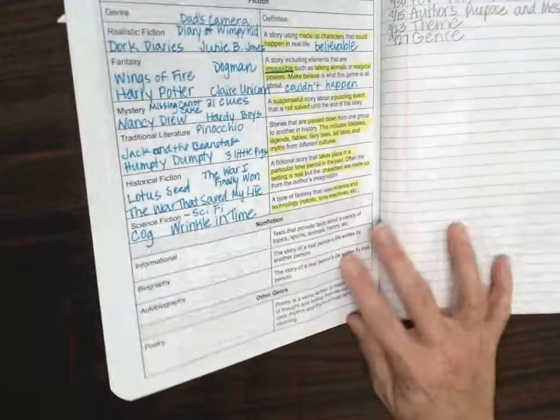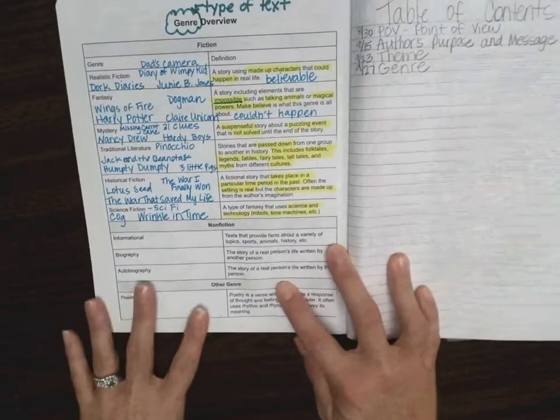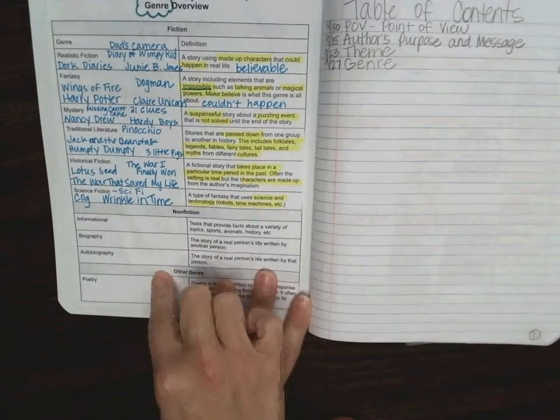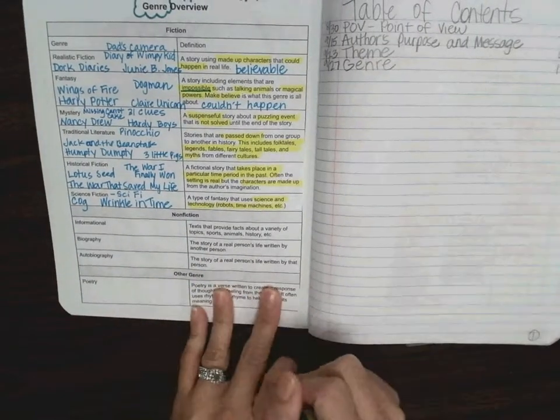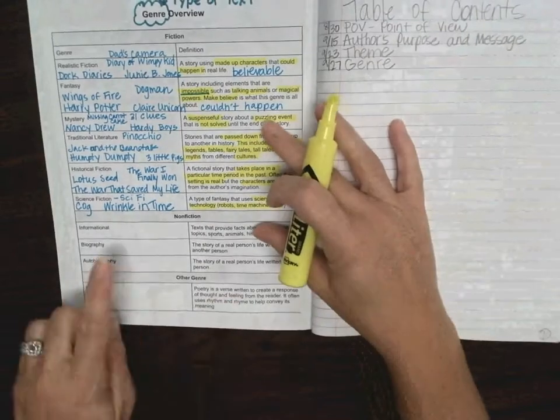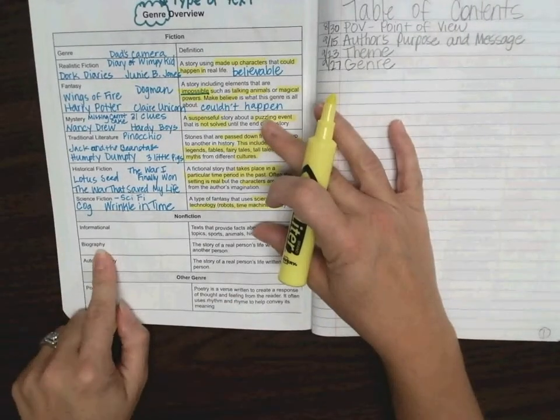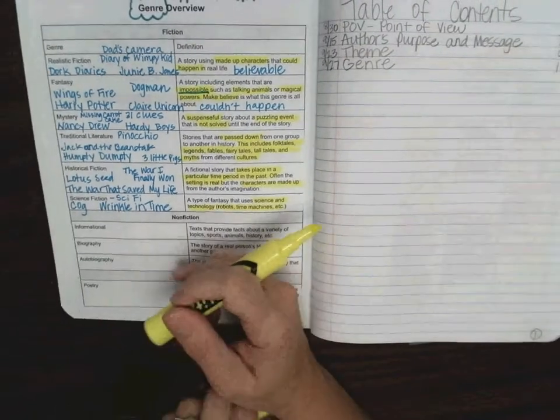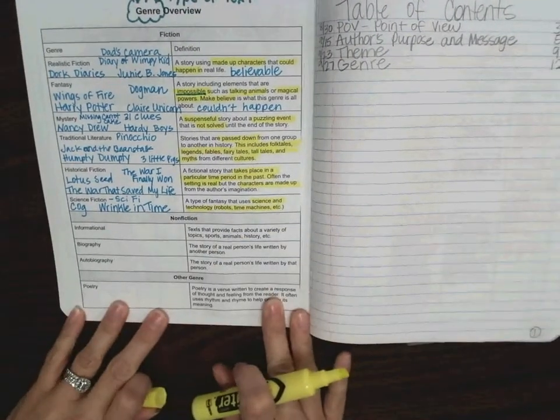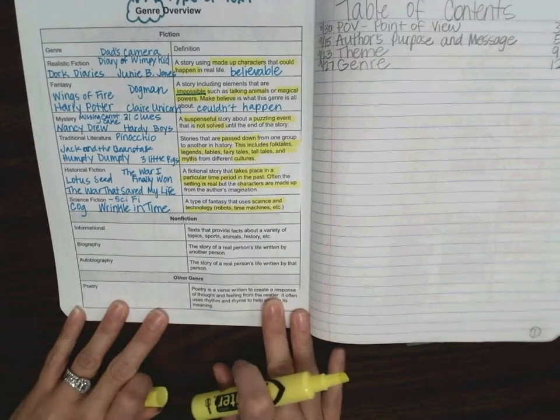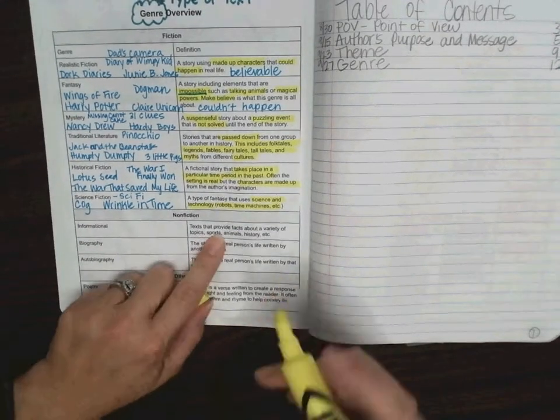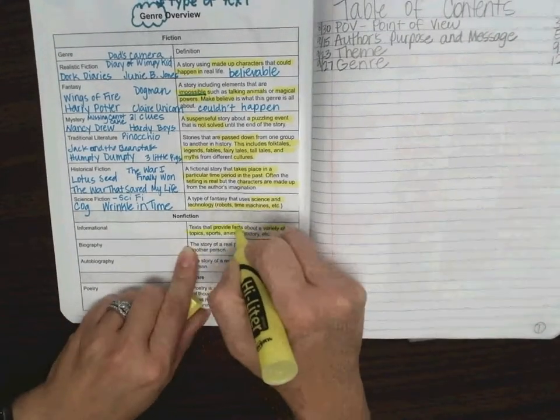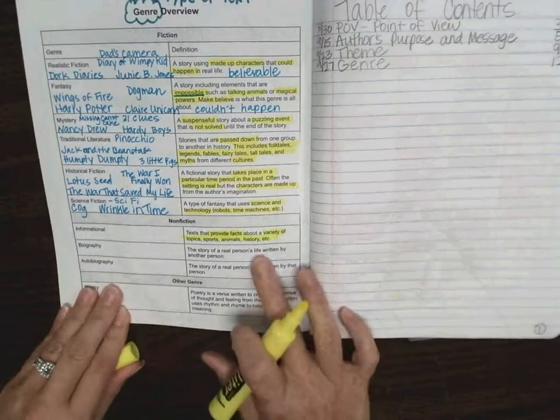let's think about the genre, and I want you to open your reader's journals, and I want you to look at our genre overview. As we look at our genre overview, I want you to think about informational biography and autobiography. So I'm going to use this highlighter, so if you have a highlighter, you can pause the video and get it out. So informational is text that provide facts about a variety of topics, sports, animals, history, etc. That is informational.